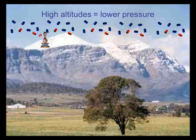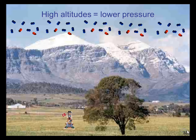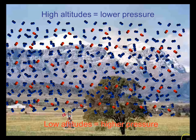So why do we talk about air pressure being different in different spots? If you're high up on a mountain, high altitudes are going to have lower pressure because there are going to be fewer particles pushing down on you. If you move down lower, look at all the particles pushing down on you — so low altitudes have higher pressure.